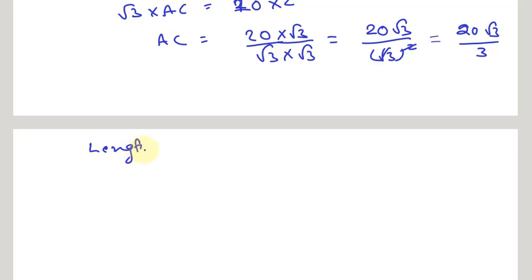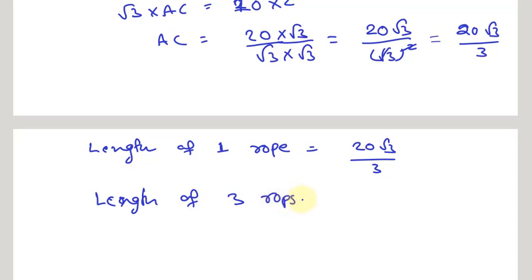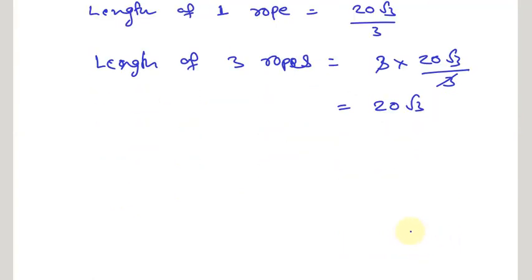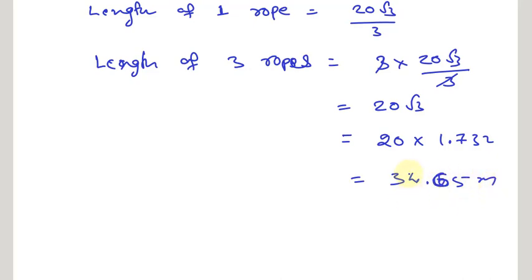The length of one rope is 20√3 / 3. Since we need three ropes, length of three ropes = 3 × (20√3 / 3) = 20√3. Substituting √3 ≈ 1.732, we get 20 × 1.732 = 34.65 meters. Therefore, we require a total rope length of 34.65 meters. Thank you friends for watching this video.